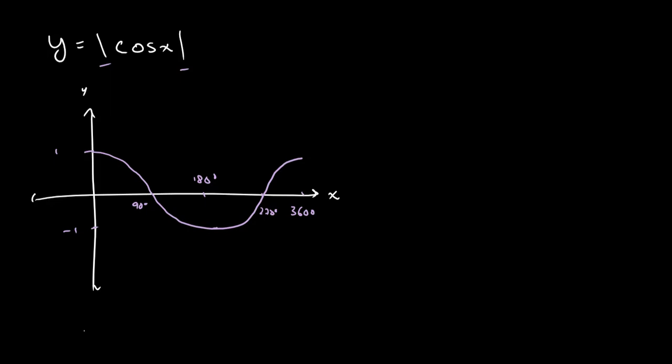Now with the absolute value what we do is we want to make everything positive. So we simply reflect everything that is below the axis to become above the axis. So whereas this was coming down to negative 1 over here, it will come to the point 1 instead. And our final graph will look like this.